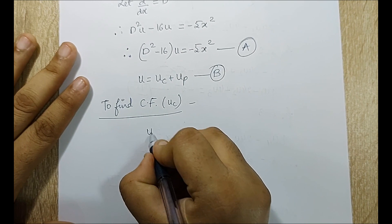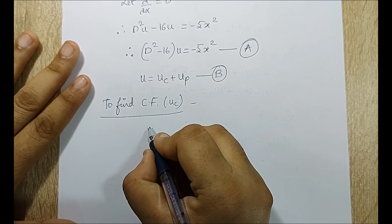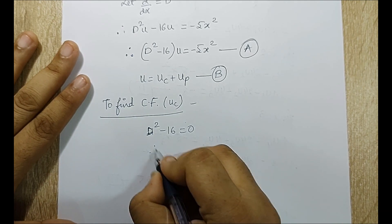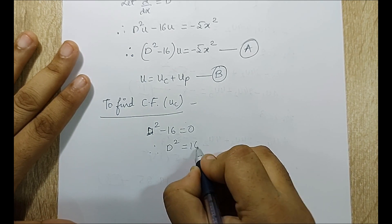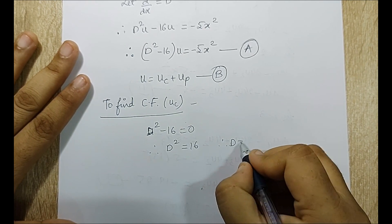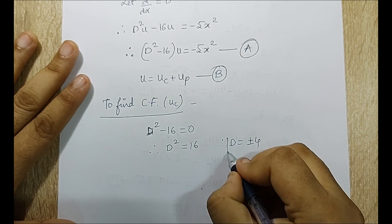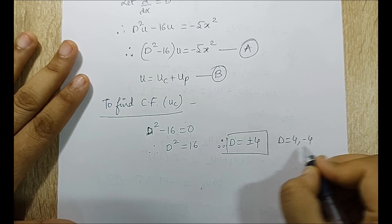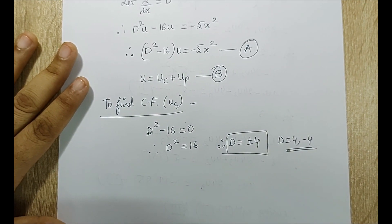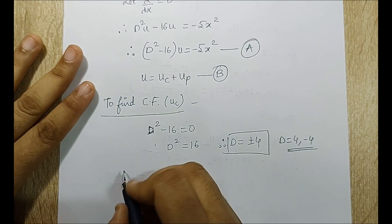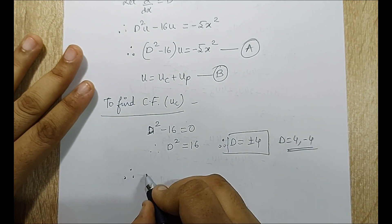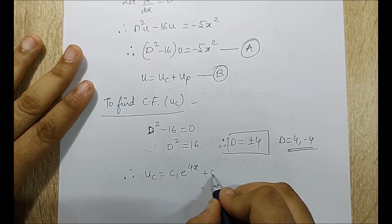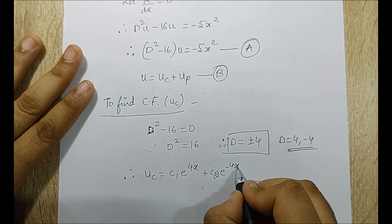For the complementary function, I set the auxiliary equation D² − 16 = 0, giving D² = 16 and D = ±4. The roots are real and unequal, so u_c = C₁·e^(4x) + C₂·e^(−4x). I mark this as equation C.